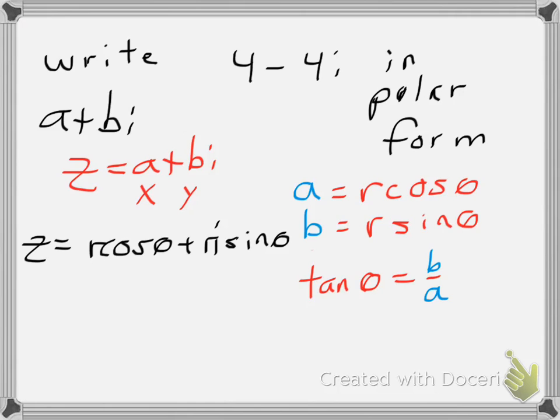Or what is generally accepted as the polar form is z equals r times the quantity cosine theta plus i sine theta.